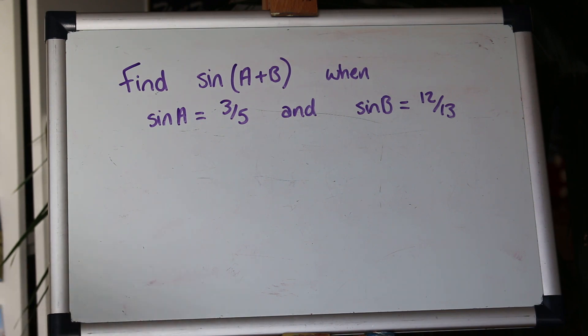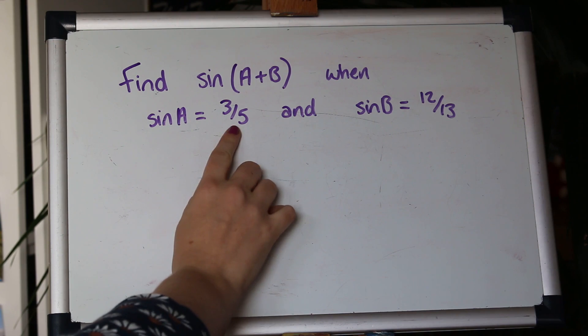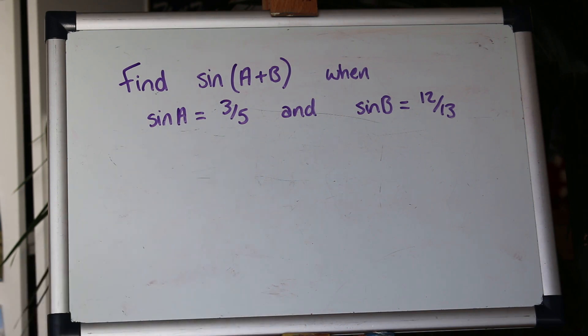So one of the temptations here would be to inverse sine of 3 fifths to get what the angle is and then go on that way but if you do that you'll be rounding decimals and you won't get the exact answer.